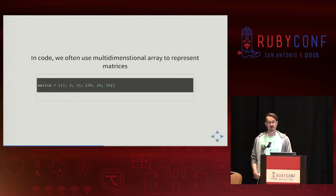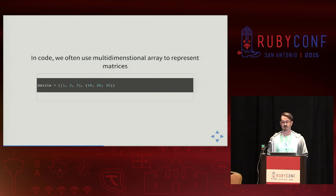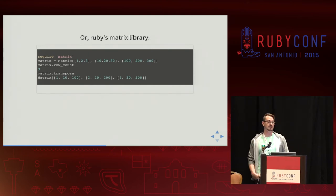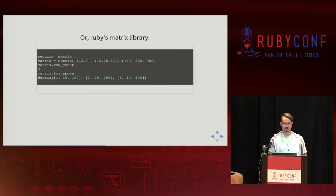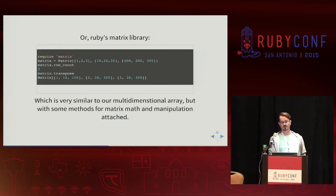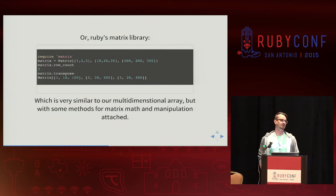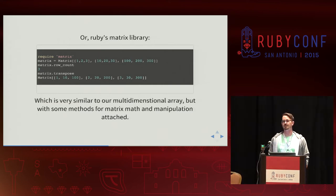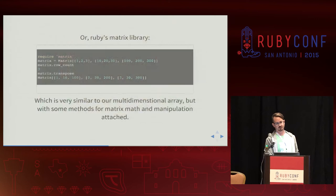So what is a matrix in code? We often just use multidimensional arrays to represent matrices, or we can use Ruby's matrix library — we have a code example for that. Using Ruby's matrix library gives you extra methods for more intense calculations. There's also open source libraries out there like nmatrix that you can use.